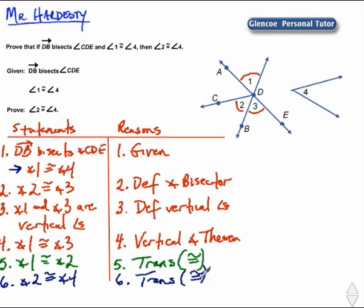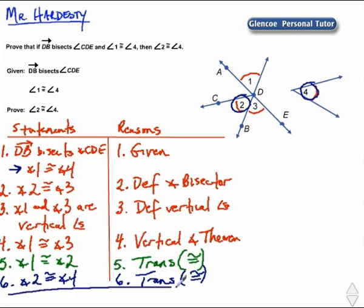Let's check that in the picture. Angle 1 congruent to angle 4 from the given means those also have the same congruence mark. We can see all four angles having the same measure. We were trying to show angle 2 congruent to angle 4, and we have just proven that using the transitive property of congruence.